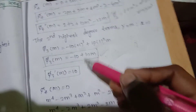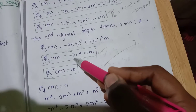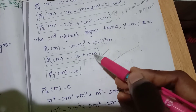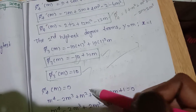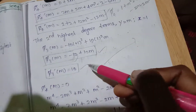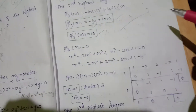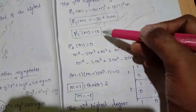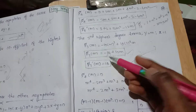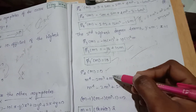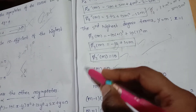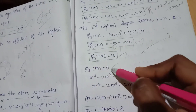Now we will differentiate again. The constant is 0, plus 10m differentiates to give 10. So φ₄(m) is equal to 0 — this is the condition. If you want to find any asymptote of degree n, we set φ₄(m) equal to 0.